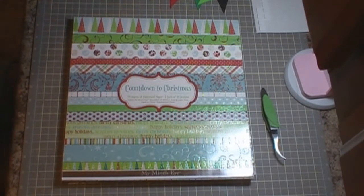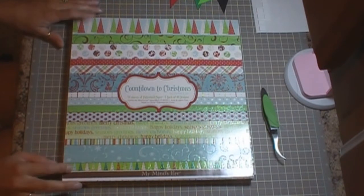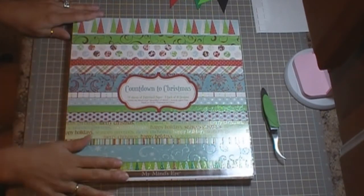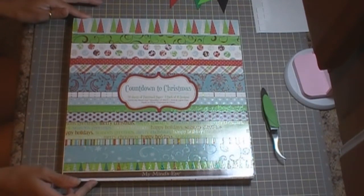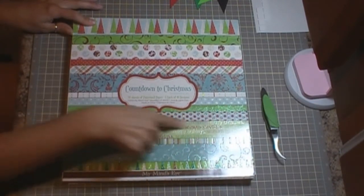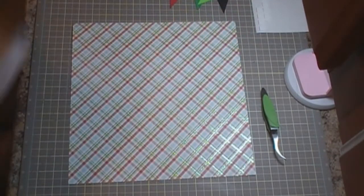Hello everybody, it's Jennifer with creativecricutdesigns.blogspot.com and we're going to be making another Christmas layout today. This is the paper pack that I'm using - it's by My Mind's Eye and it's Countdown to Christmas. I'm using this one right here and this one right here. So we're going to go ahead and get started.